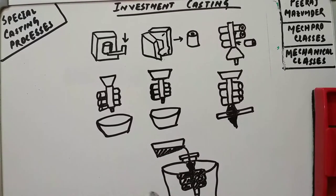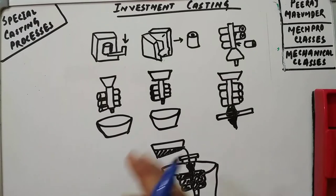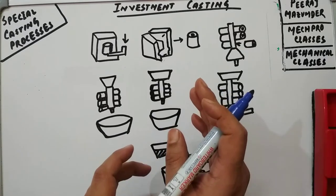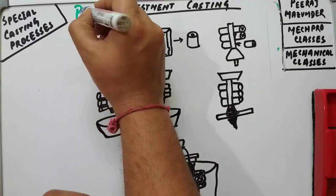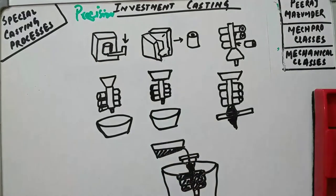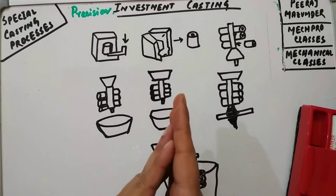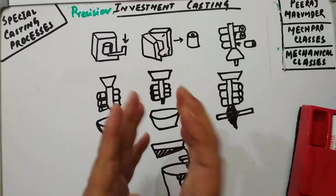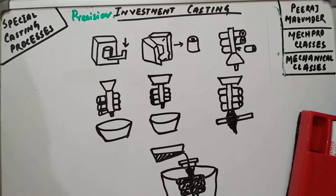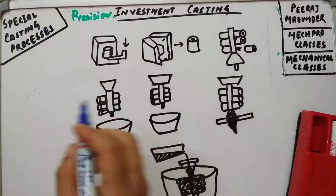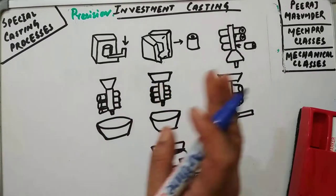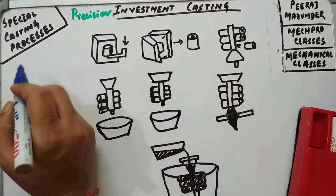Our next special casting process is investment casting, also known as precision casting due to its versatility in dimensional accuracy. Very complex structures can be easily made using this method. One important point for MCQ: this particular method uses an expandable pattern, which is very commonly asked in competitive examinations.